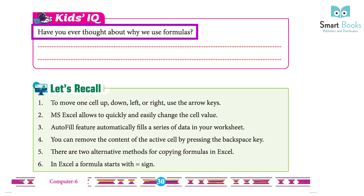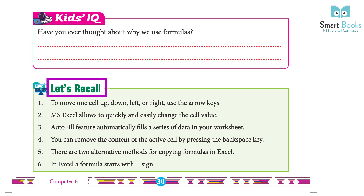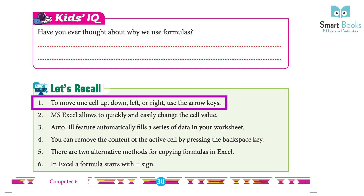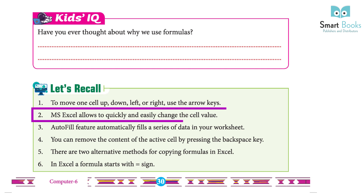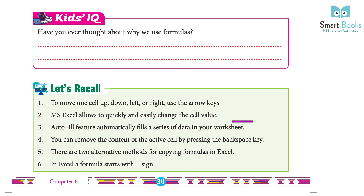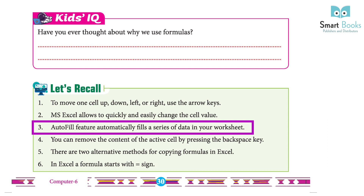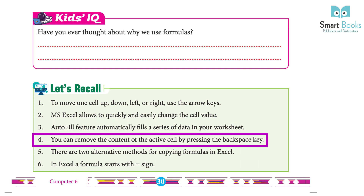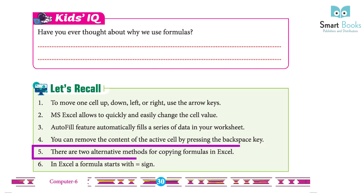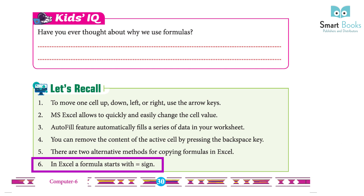Have you ever thought about why we use formulas? Let's recall: 1. To move one cell up, down, left, or right, use the arrow keys. 2. MS Excel allows us to quickly and easily change the cell value. 3. The autofill feature automatically fills a series of data in your worksheet. 4. You can remove the content of the active cell by pressing the Backspace key. 5. There are two methods for copying formulas in Excel. 6. In Excel, a formula starts with an equal to sign.